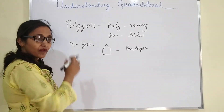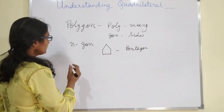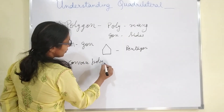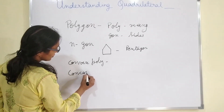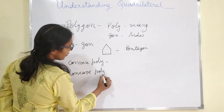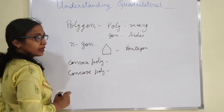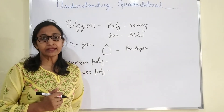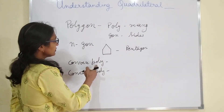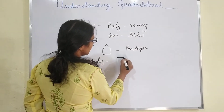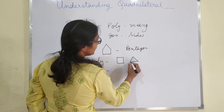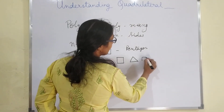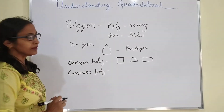The next terms are convex polygon and concave polygon. In a convex polygon, all the angles of the figure are less than 180 degrees. That is called a convex polygon. For example, square, triangle, rectangle — any figure where all angles are less than 180 degrees — these are convex polygons.